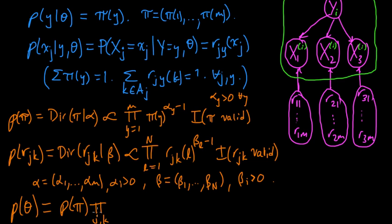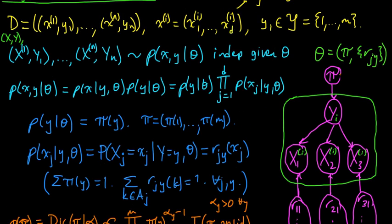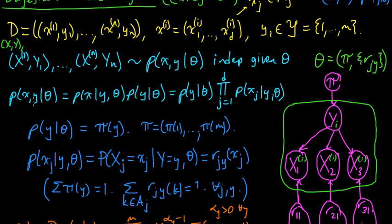That defines our prior distributions. Altogether, if we multiply the prior times the likelihood, we have a complete joint distribution defined. So that's our model.